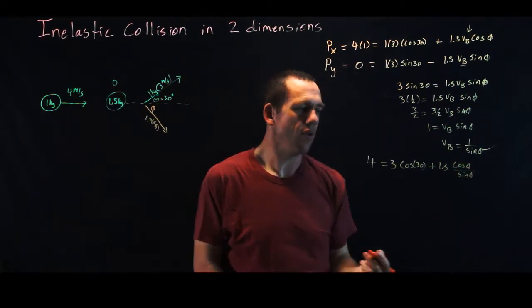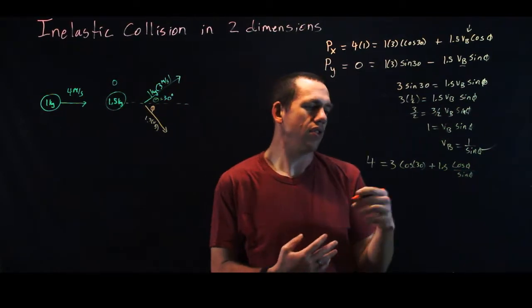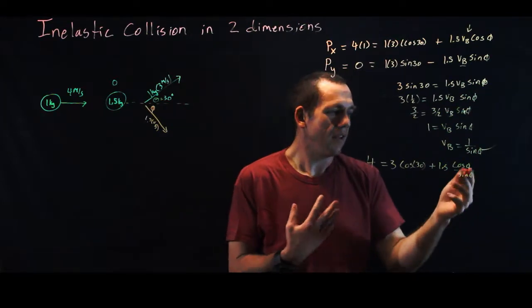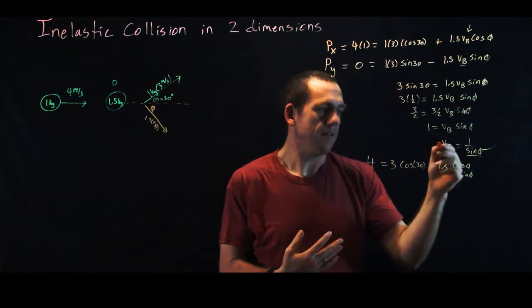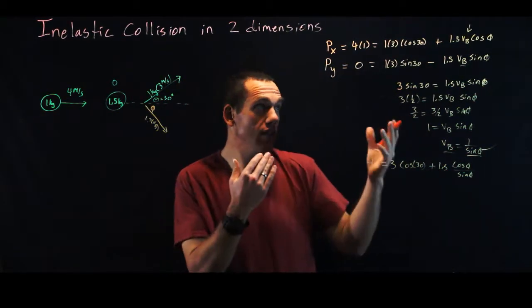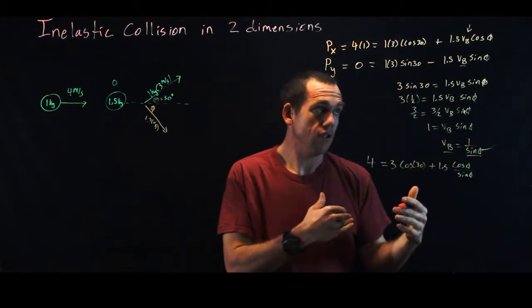And happily, that's just cotangent. So we can actually throw all this into our calculator, figure out what our angle is, once we know our angle, then we can put it in here to find vb, and we're done, right? So we can do that with substitution and elimination.